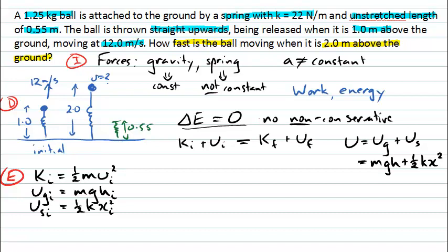There's something we can do here: we can choose our zero point for gravitational potential energy. We're free to choose that zero point anywhere in the problem, so we might choose the height at the start of the problem as zero. But we must be careful — can we say that the initial elastic potential energy is also zero? It turns out that's not possible.